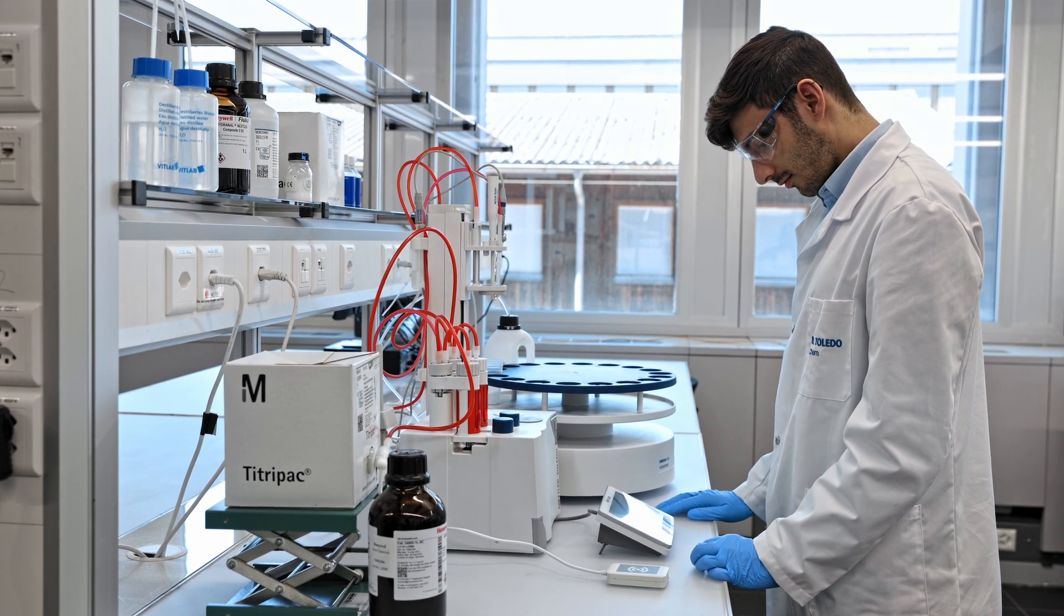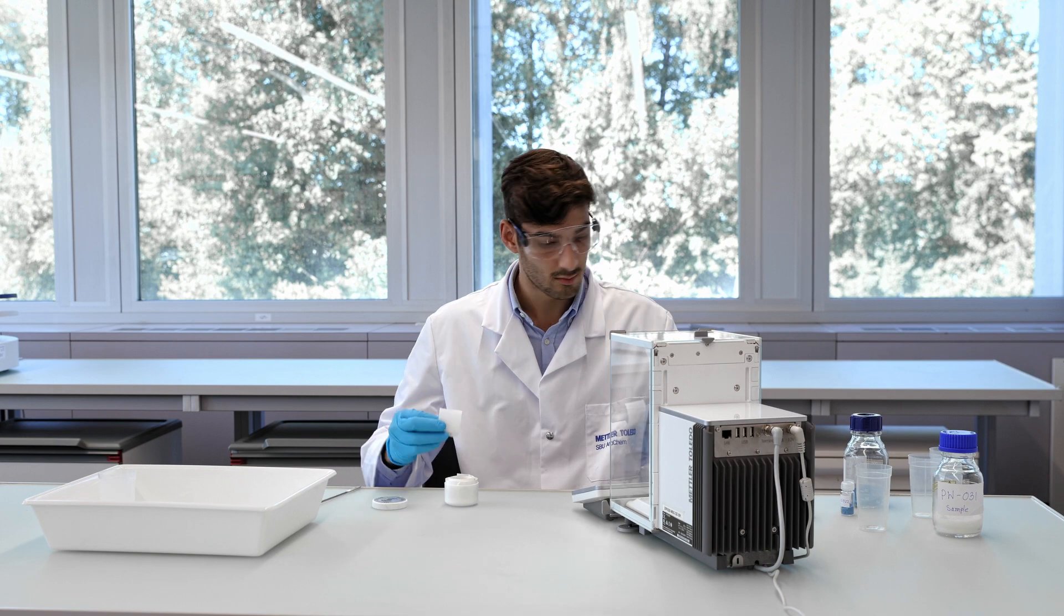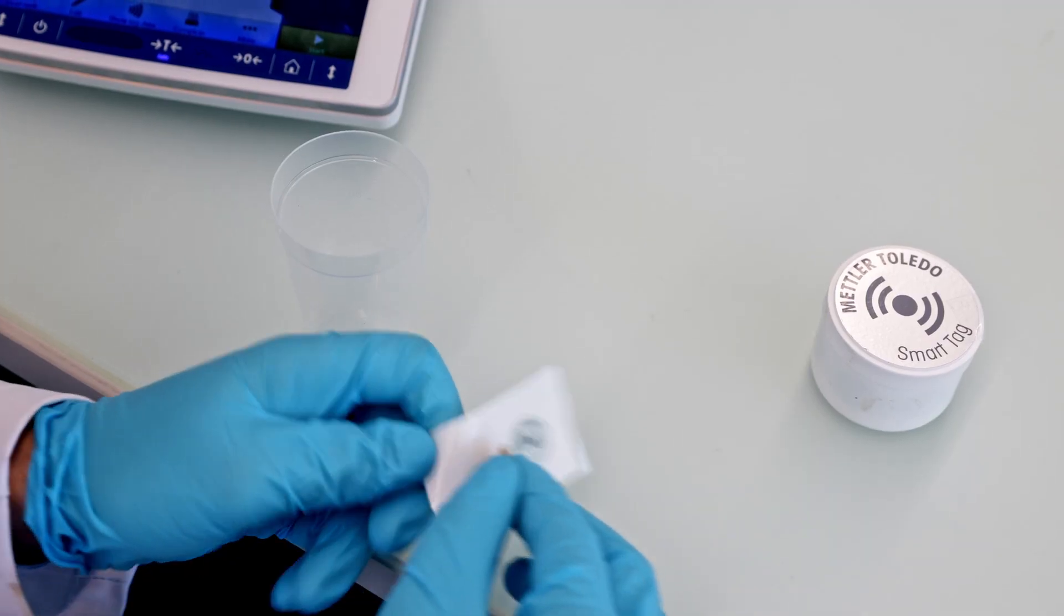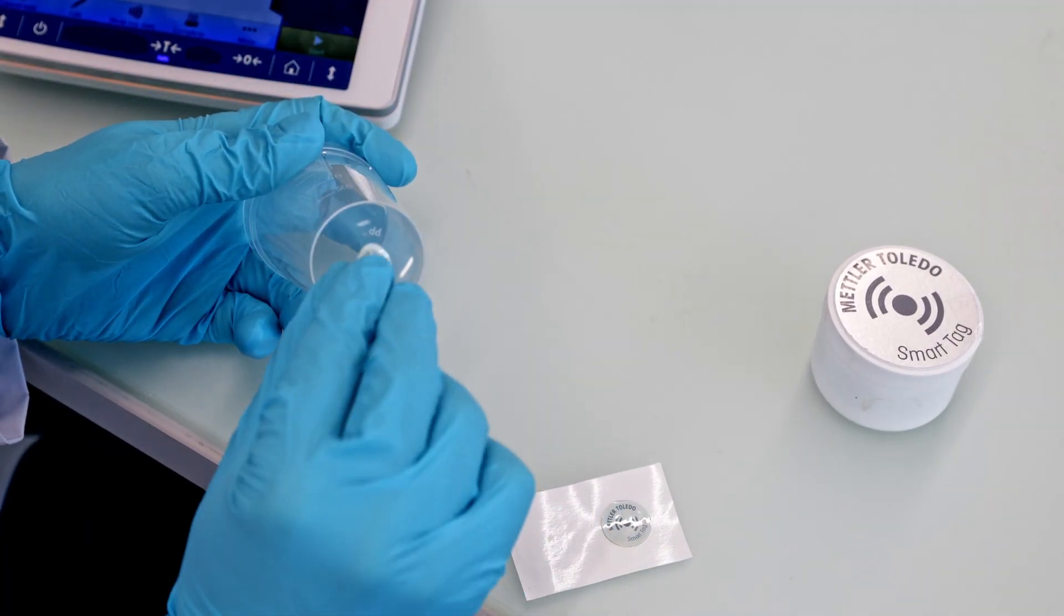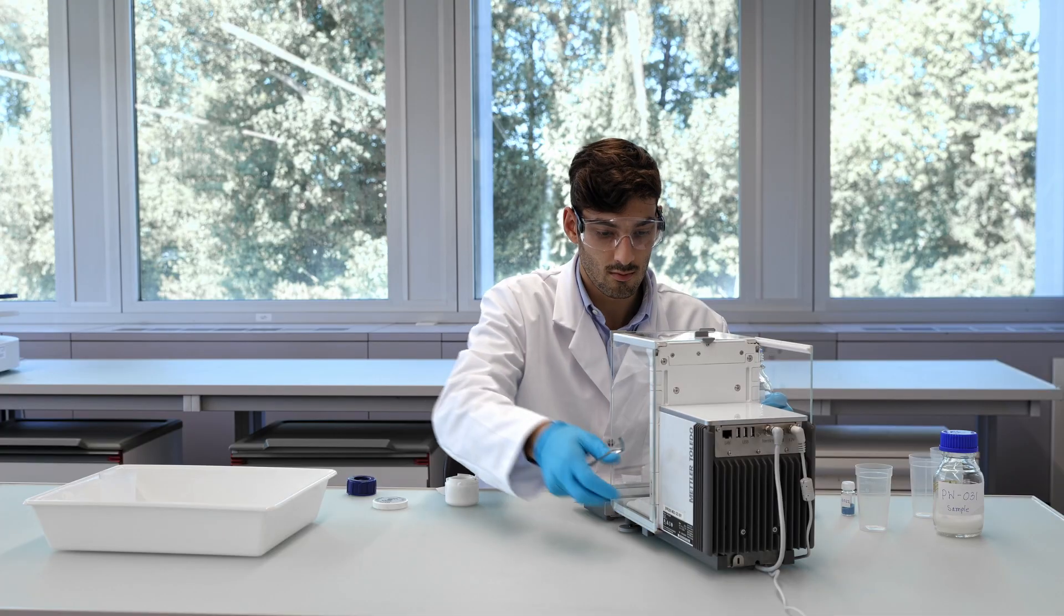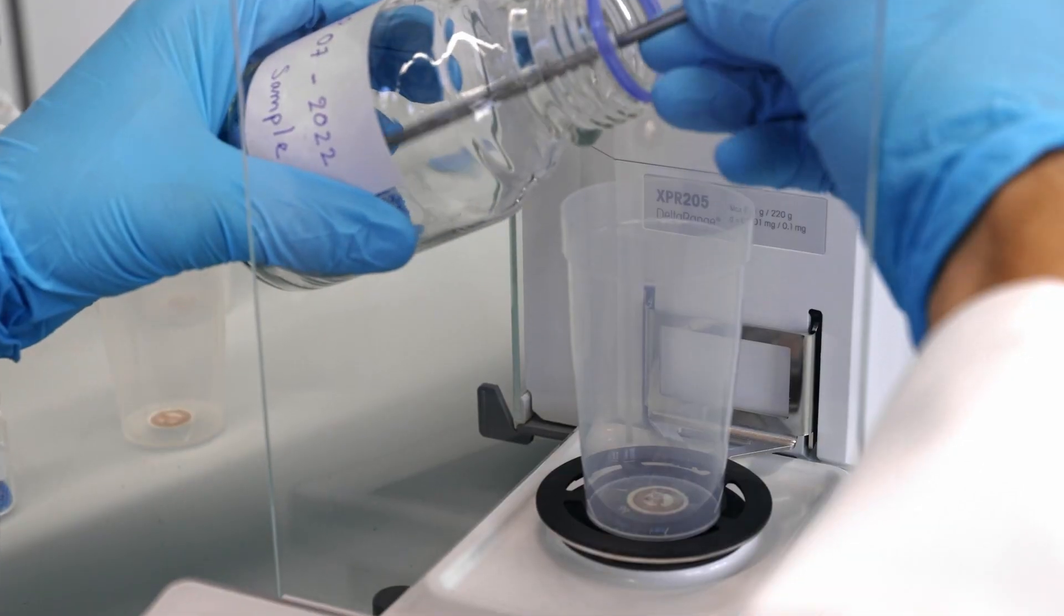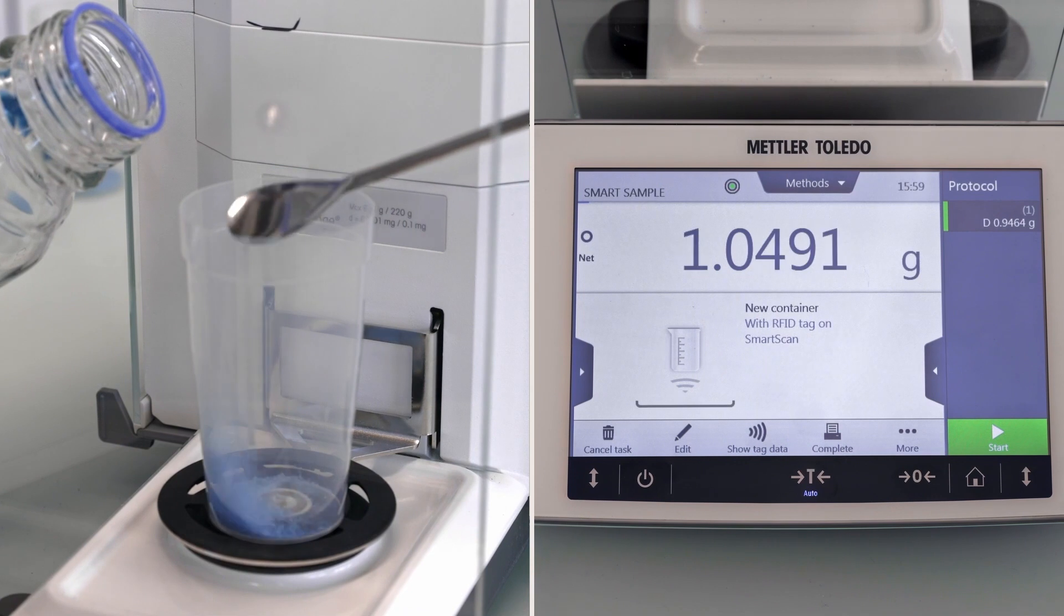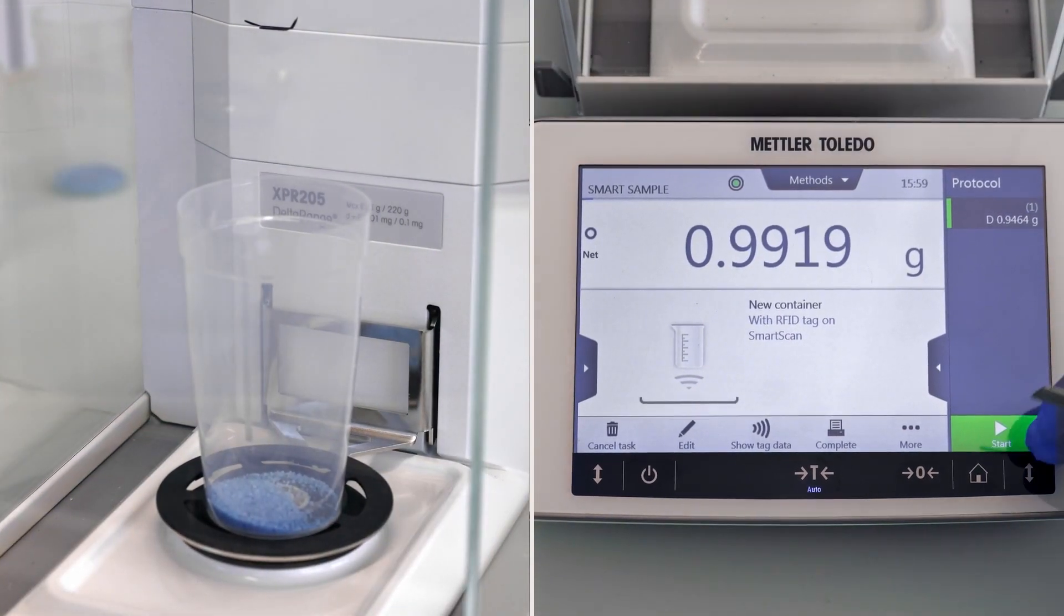Sample preparation has never been so straightforward. Simply attach a smart tag to your titration beaker and weigh your sample on a Mettler Toledo XPR balance. Smart sample RFID technology joins the balance and titrator together in one seamless workflow.